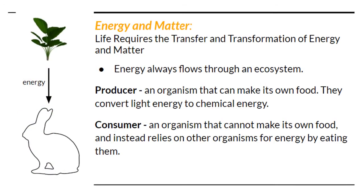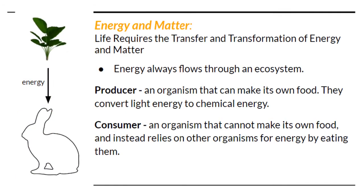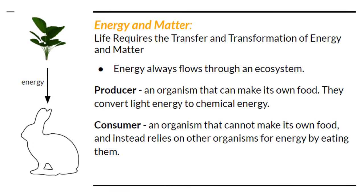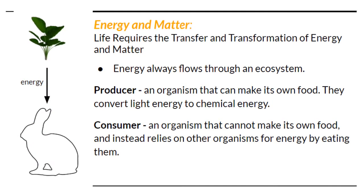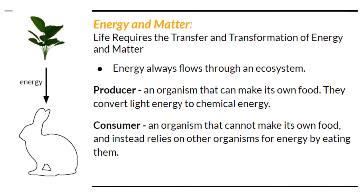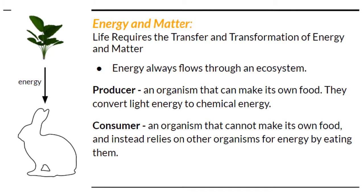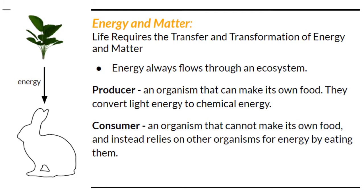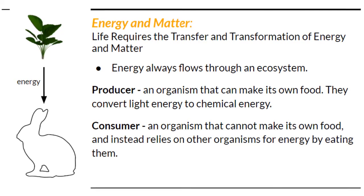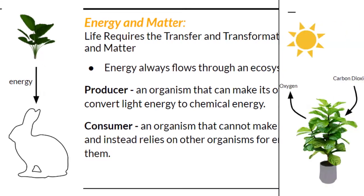The next theme is energy and matter. Life requires the transfer and transformation of energy and matter. Energy always flows through an ecosystem. A producer is an organism that can make its own food — they convert light energy into chemical energy. A consumer cannot make its own food and eats other organisms for energy.